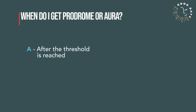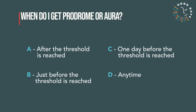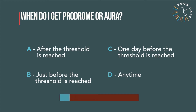Next question: when do you get prodrome or aura? Answer A: after the threshold is reached. Answer B: just before the threshold is reached. Answer C: one day before the threshold is reached. Answer D: anytime. The correct answer is A — after the threshold is reached. Prodrome and aura are two different phases of a migraine attack with specific symptoms such as yawning or visual issues, and symptoms appear once the threshold has been reached and the brain receptors are upset.